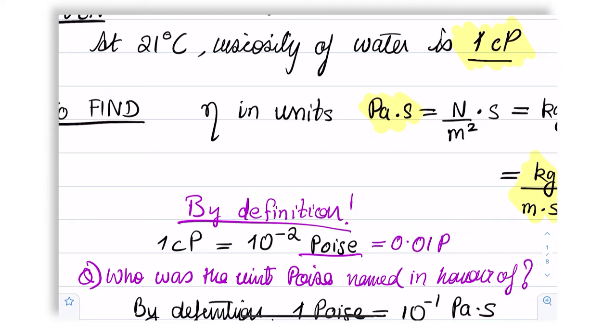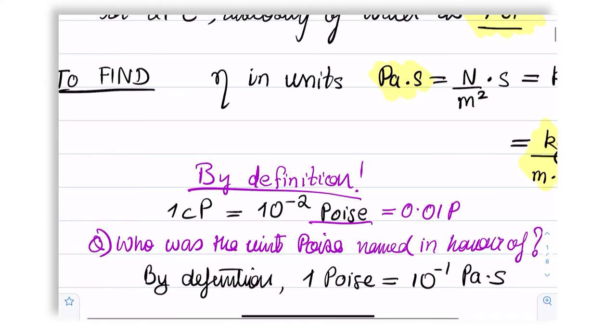The second fact we need to know is the conversion from poise to SI unit Pascal second. As it turns out, one poise is equal to 10 to the power minus one Pascal second.